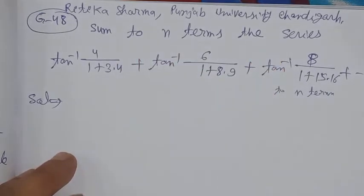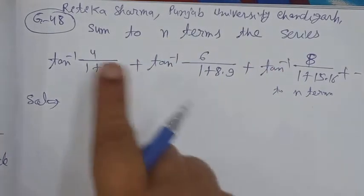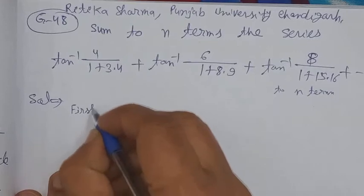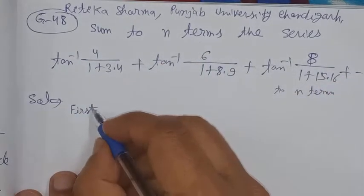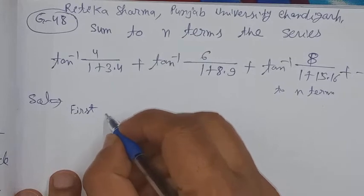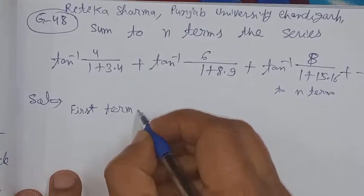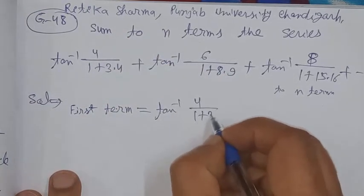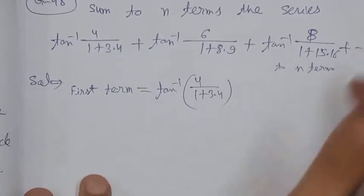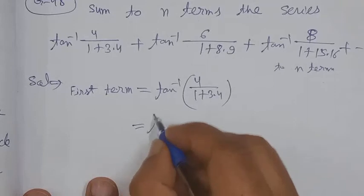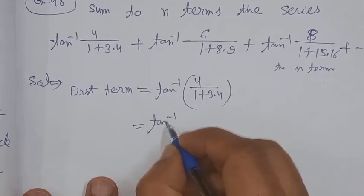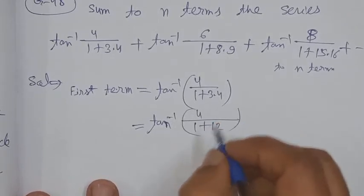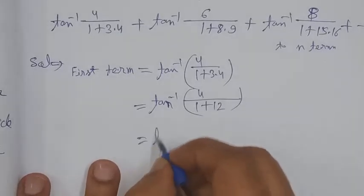To find the sum up to n terms, we will first find the general term. This form is going to be a difficult task, so we will change the form first. We do this every time. So, let's start with tan⁻¹(4/(1+3·4)). We can rewrite this as tan⁻¹(4/(1+2·12)).